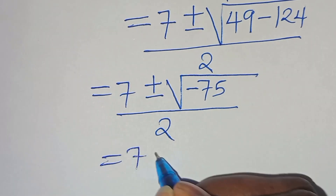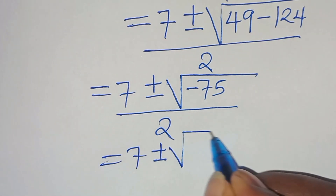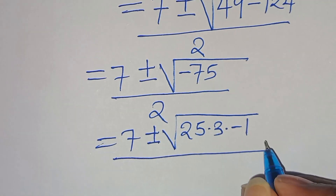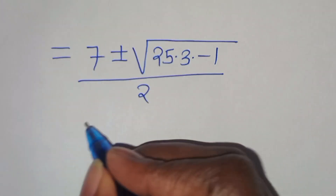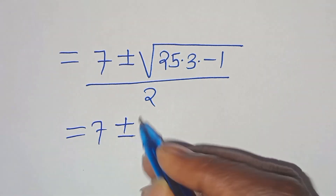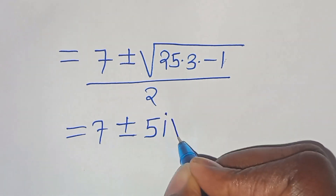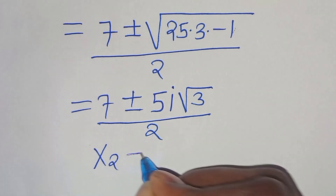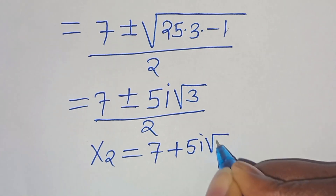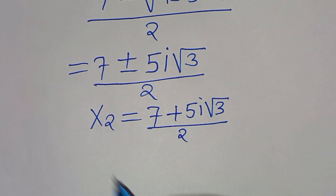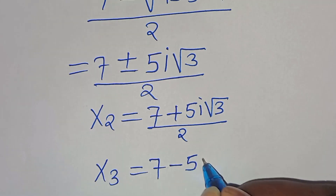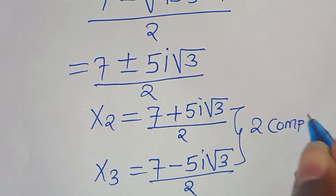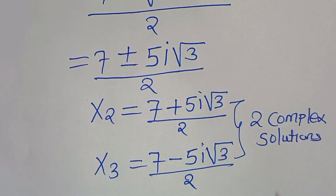We express √(minus 75) as √(25 × 3 × minus 1), which equals 5i√3. So x₂ equals (7 plus 5i√3) / 2 and x₃ equals (7 minus 5i√3) / 2. These are two complex solutions under case 1. Now let's proceed to case 2.